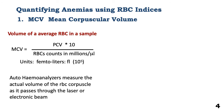An auto-hemoanalyser can measure the actual volume of a red blood cell corpuscle as it passes through the laser or electronic beam. So when you deal with hemoanalysers, you don't need PCV — you get a very accurate measure of the mean corpuscular volume.